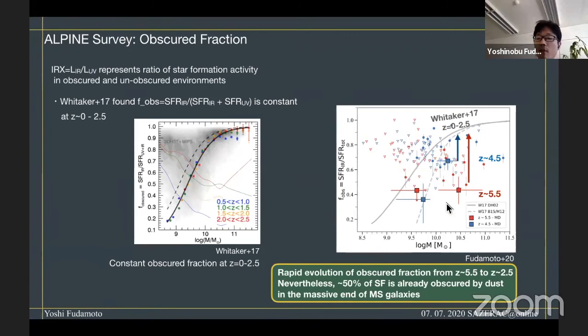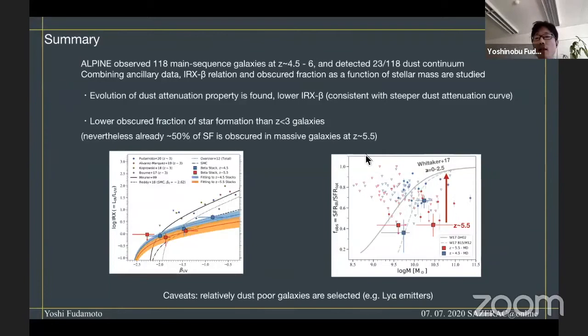Nevertheless, these galaxies, in particular for the massive galaxies, already show that about 50% of obscured fraction of star formation activity, suggesting that this dust obscuration is very important even in a very high-redshift universe or potentially in the epoch of reionization. So just a summary: we have found the evolution of dust attenuation property and dust obscuration. Another important point is to go to even higher redshift.